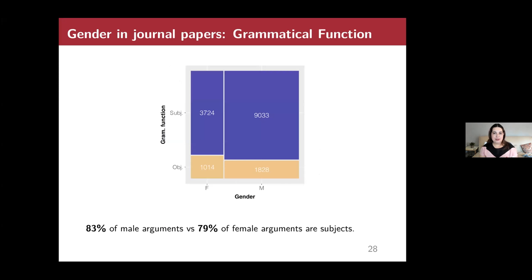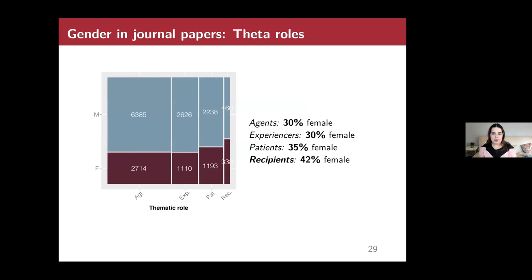Looking at grammatical function: 83% of male arguments are subjects and 79% of female arguments are subjects. So there are slightly fewer female subjects than male subjects — not a huge difference, but a consistent one.